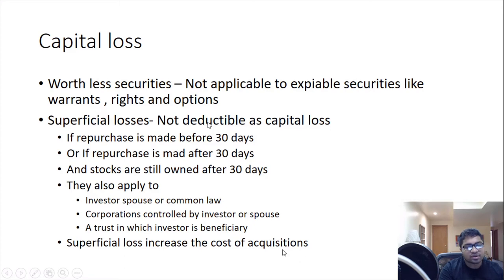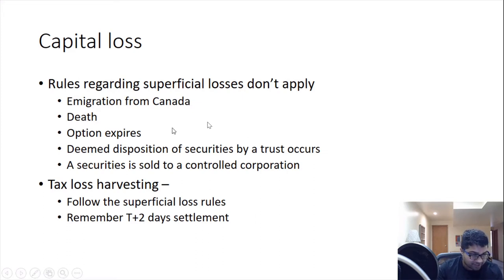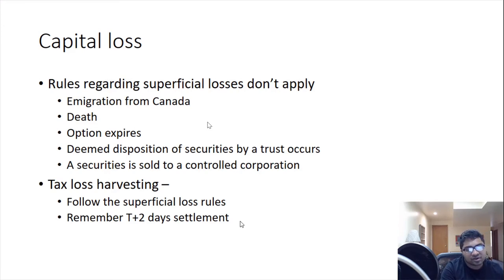Superficial losses, while not deductible now, are added to the adjusted cost basis of the asset. There are exceptions where superficial loss rules do not apply: emigrating from Canada, death, option expiry, deemed disposition by a trust, and sale to a controlled corporation. When doing tax loss harvesting, remember that CRA uses the settlement date (T+2) rather than the selling date when calculating the loss.